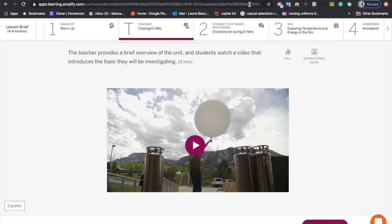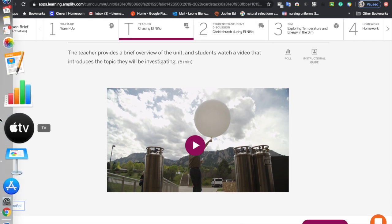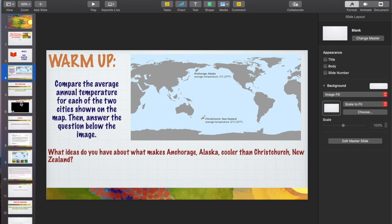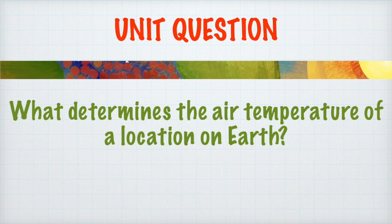Welcome back. I'm going to introduce the unit question before we get started with the video. This is the question we're going to talk about for all the chapters in this unit: what determines the air temperature of a location on Earth? So if we're looking at Anchorage and Christchurch, New Zealand, what determines whether it's going to be an average temperature of 11 degrees or 3 degrees Celsius?